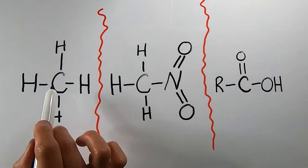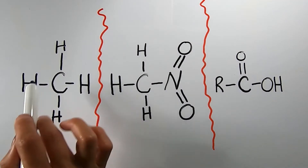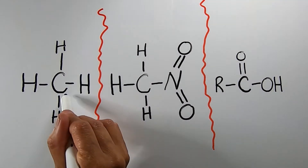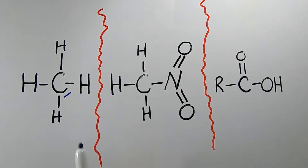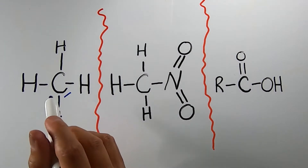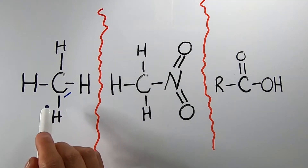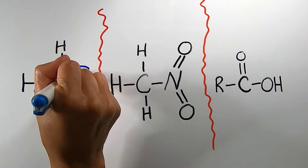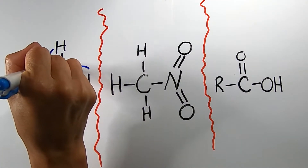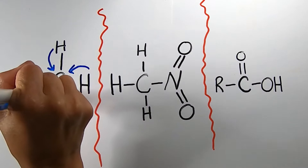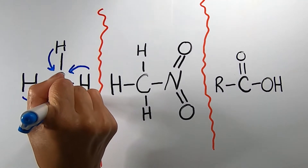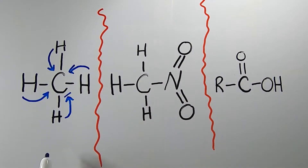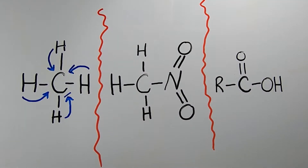In the first molecule, we have a carbon attached to four hydrogens. Carbon is more electronegative than the hydrogens, which means carbon is the electron withdrawing group. It will withdraw electrons from the hydrogens, deshielding the hydrogens of their electron cloud, but not as much as the other two molecules.